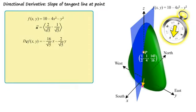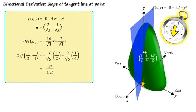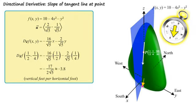If we stand on the hill at the point (1/2, 1/4) and start moving in the south by southeast direction represented by vector u, the change in altitude is given by evaluating the directional derivative at (1/2, 1/4). This gives us about -3.8, meaning that our altitude decreases by 3.8 feet per horizontal foot in the direction of u.